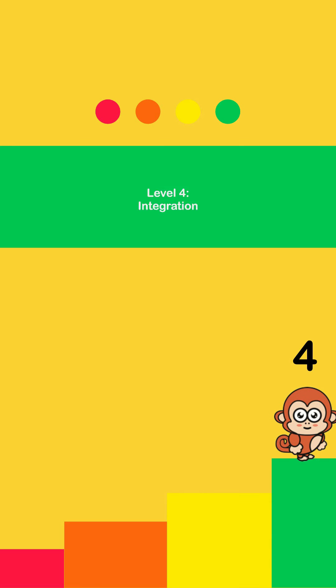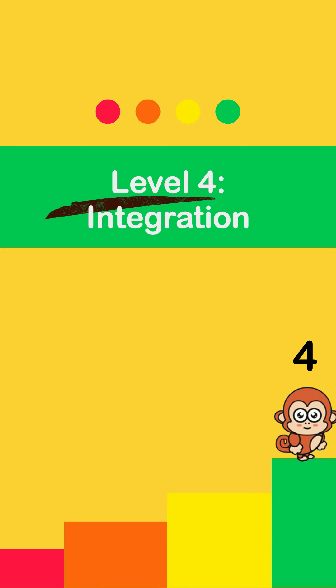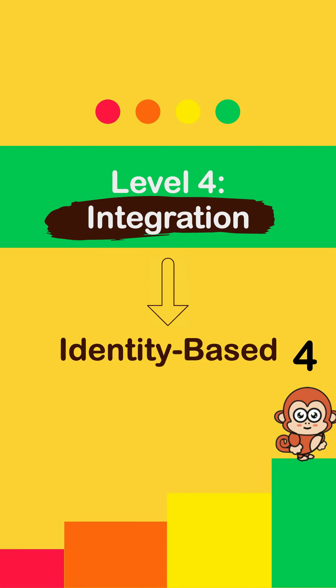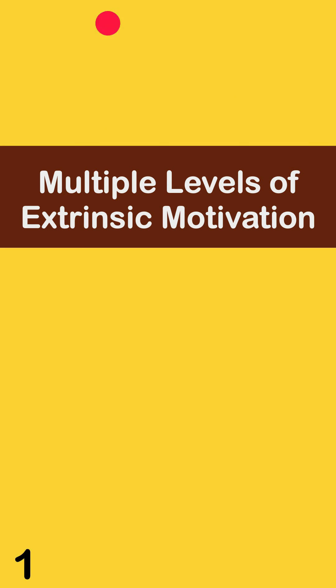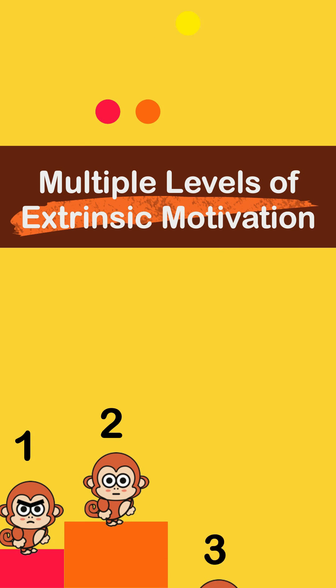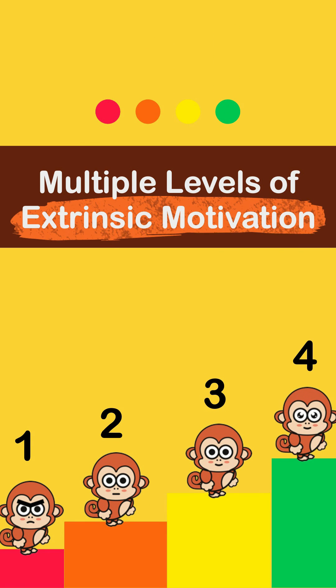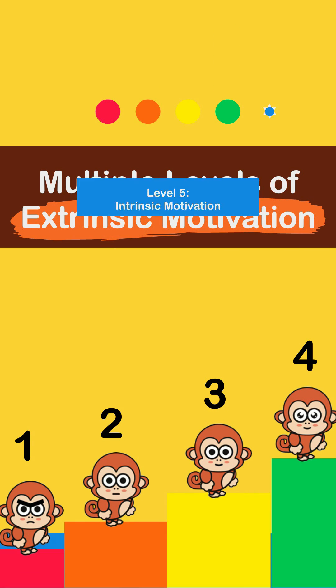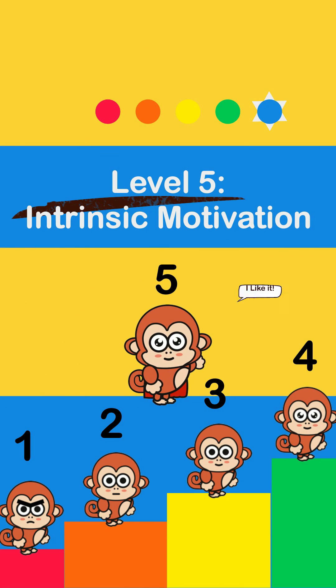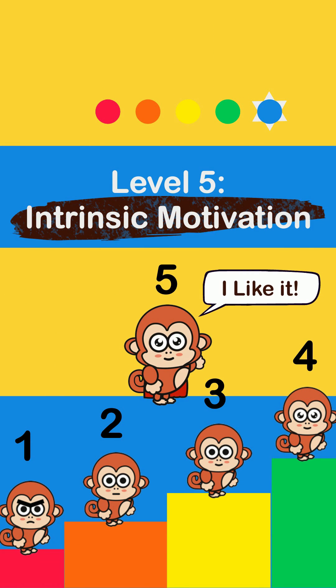The fourth level is integration. Here, the behavior has become part of who we are — our identity. The difference between these four levels of extrinsic motivation and intrinsic motivation is the fact that we still don't really enjoy the activity itself.